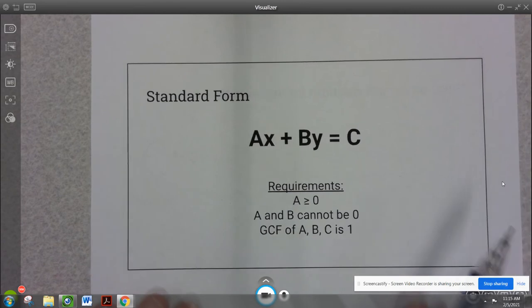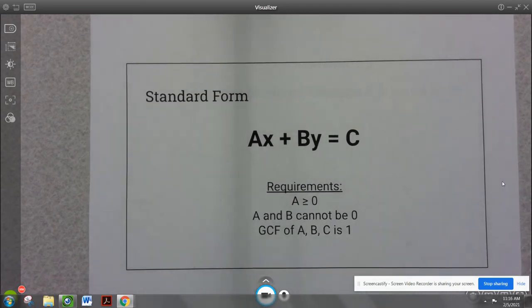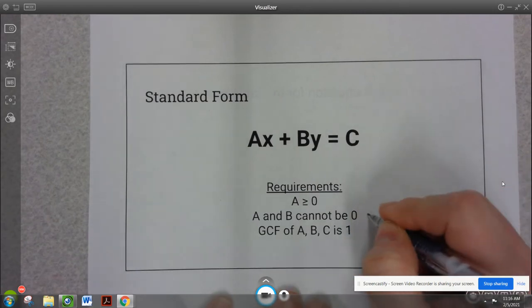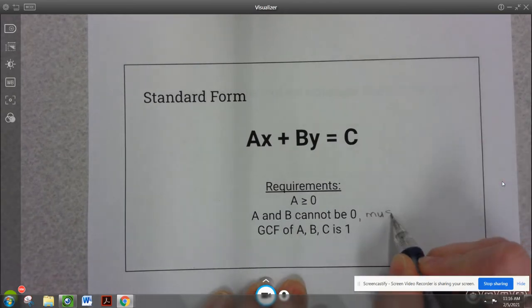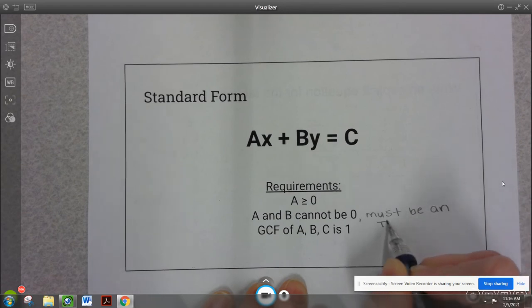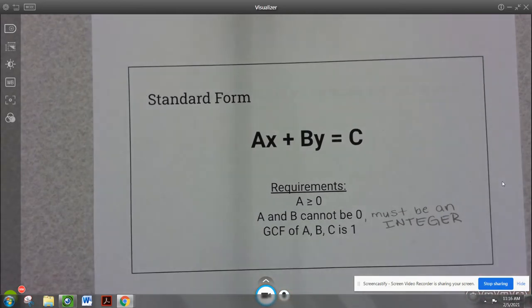And I've already given you the standard form general equation here. And there are a couple of important requirements here. My a value here, my coefficient in front of x, cannot be 0. It has to be bigger than 1. It cannot be a fraction. So a and b cannot be 0. And they must be an integer. So that means no fractions, no decimals.